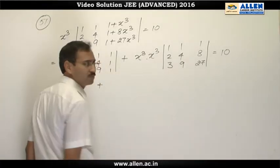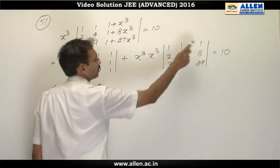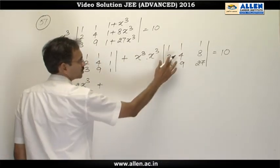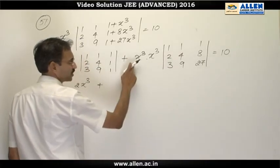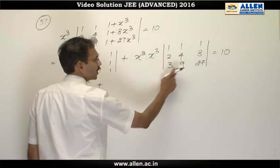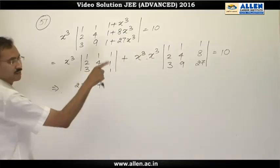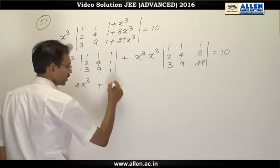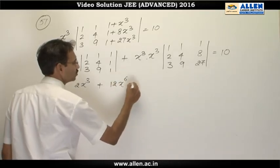We can take 2 and 3 common from this row and by solving this determinant we will have 2 times 3 which is 6. Then it is 1, 2, 4 and 1, 3, 9. The same kind of determinant having same value 2. So 2 times 6 times 2 is 12x raised to the power 6 equals 10.